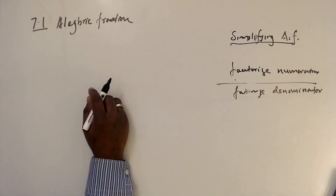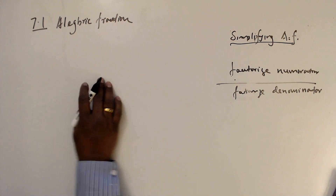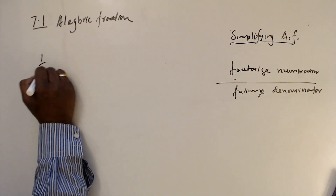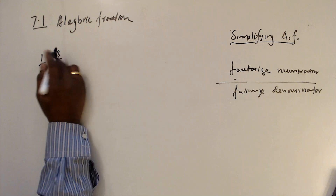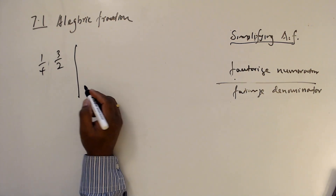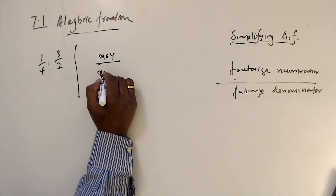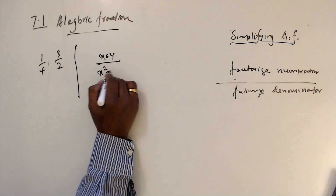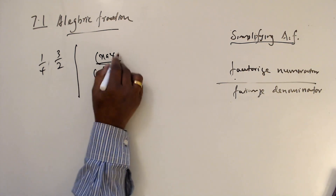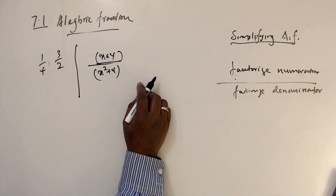Chapter 7: Algebraic fractions. We know that numerical fractions such as 1 over 4 or 3 over 2 are numerical fractions. An algebraic fraction is one where you can see variables in the numerator or denominator — those are algebraic fractions.